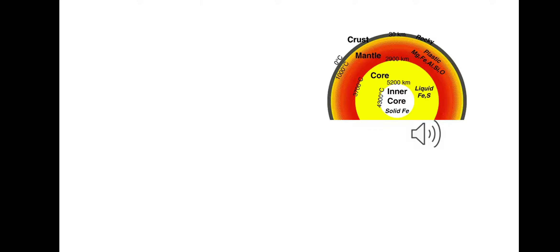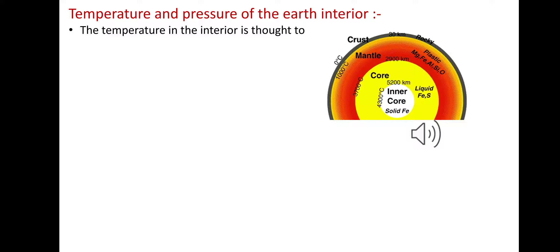Now our next point is the temperature and pressure of the interior of the Earth. The temperature increases toward the inner core at the rate of one degree Celsius for every 32 meters. The temperature in the interior is thought to be as high as 5000 degrees Celsius.